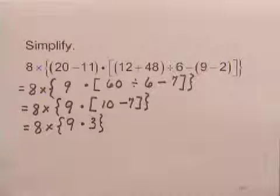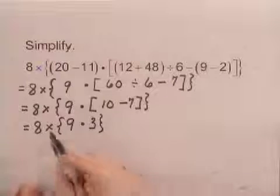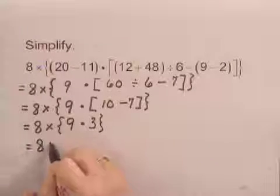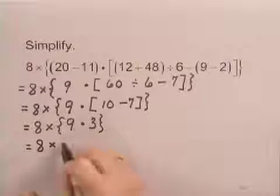I'm left now with just 9 times 3 inside the braces. So in my next step, I'll simplify that. 8 times, 9 times 3 is 27.